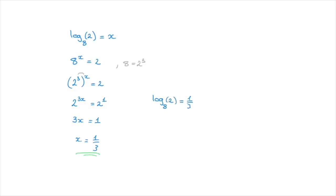We could also write this in exponential form as 8 to the power of 1 over 3 equals to 2, which is another way of saying that the cubic root of 8 is equal to 2. That's how we can calculate logarithms when the base is greater than the number that's put inside the logarithm. And that's it for this tutorial.